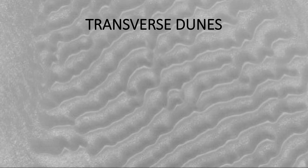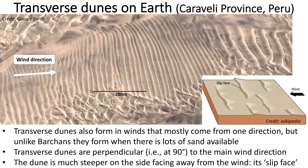That was all about Barkan dunes. Now we're going to look at transverse dunes. These are some beautiful transverse dunes on Earth — they're actually in Peru. What's interesting about transverse dunes is that they also form like Barkan dunes in winds that mostly come from one direction, but unlike the Barkans, they tend to form where there is lots of sand available.